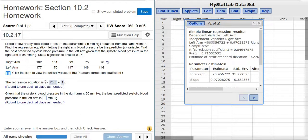Given that the systolic blood pressure in the right arm is 95, the best predicted systolic blood pressure in the left arm is... Okay, so X is the right arm. It says it up here. X is the right arm, and Y is the left arm. They're telling us when X is 95, what is the value of Y?